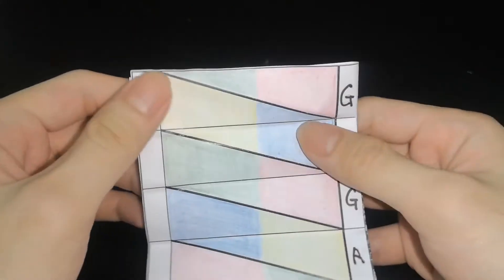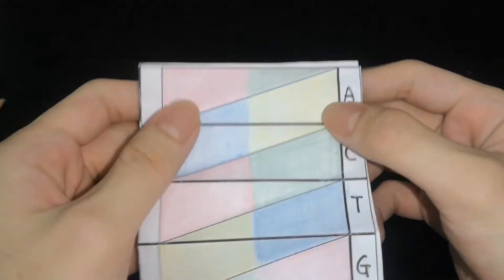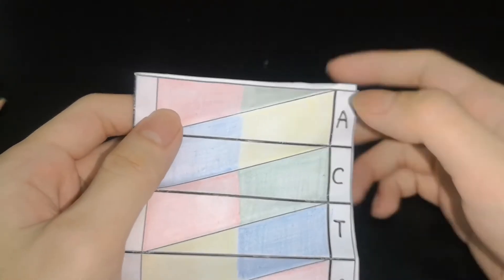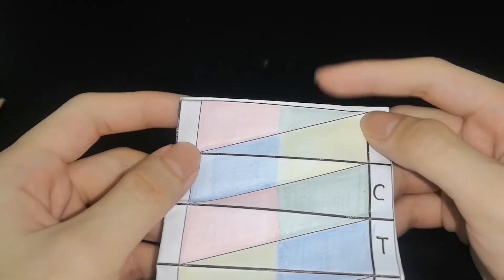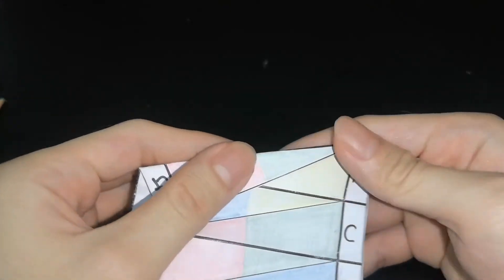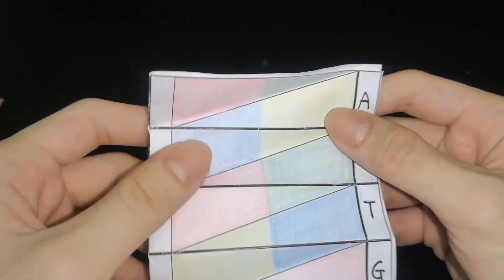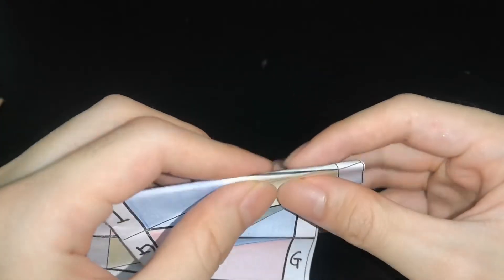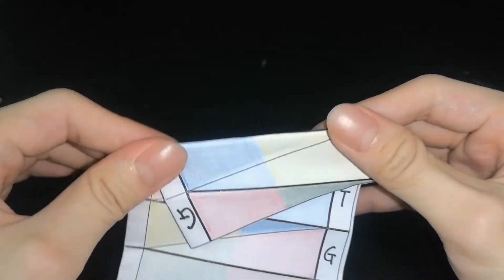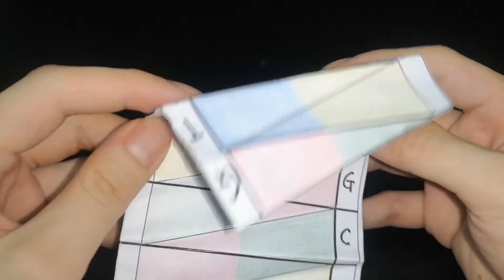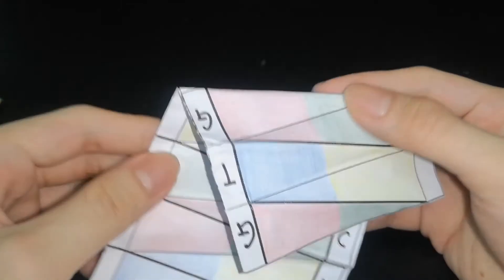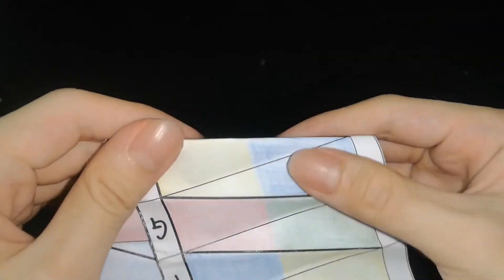Then turn the paper over. Fold along the first diagonal line. Unfold and fold along the second diagonal line. Repeat for all diagonal lines until finished.